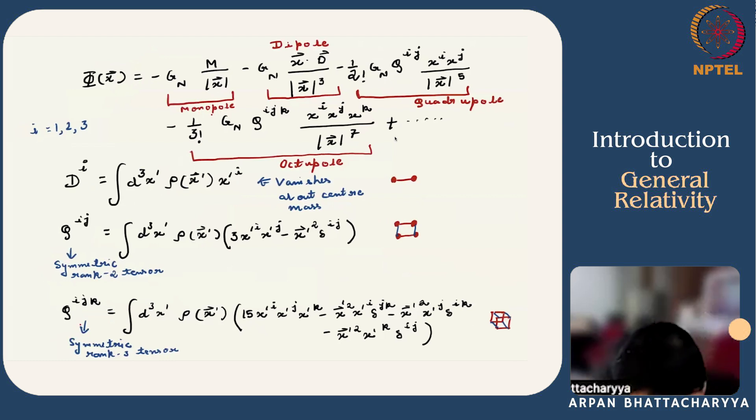The first term you can see we call the monopole term because it just comes from a point mass located at the center, and if you are considering a spherical object, you can see that this is the only contribution. The second term in this series we call the dipole contribution. d is the dipole vector which is defined here, and you can see that it vanishes about the center of mass because this is basically the definition of center of mass. If you fix your origin at the center of mass, di vanishes. So dipole contribution typically vanishes in the center of mass frame.